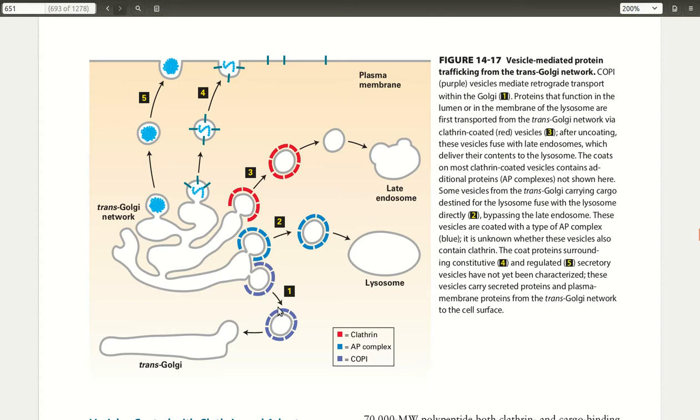Notice that some of these proteins that will go to the late endosome will have vesicles coated with clathrin, shown in red, while the ones that bind directly to the lysosome will be coated with just the AP complex shown in blue. The purple here would be the protein coat for the COP1 for retrograde transport.